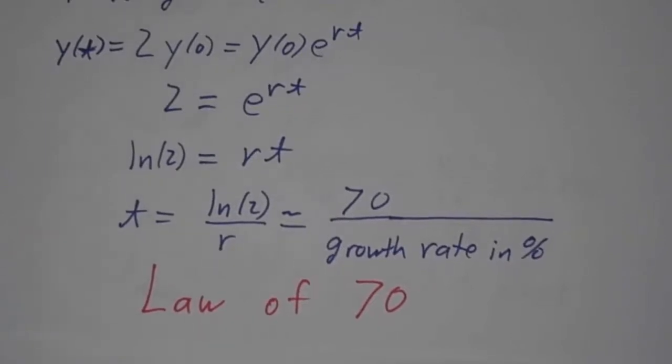If you grow at 10% per year, it'll take you 7 years to double. If you grow at 7% per year, it'll take you 10 years to double. If you grow at 3.5% per year, it'll take you 20 years to double. The amount of time it takes to double is 70 divided by the growth rate in percent. Again, it's not exact. It's really 69.3, but 70 is a pretty good approximation.